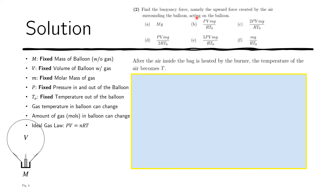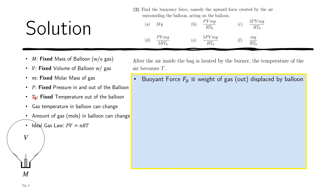Next, we need to find the buoyant force acting on the balloon. The buoyant force is the upward force created by the surrounding air, which causes the balloon to rise. By Archimedes' principle, the buoyant force equals the weight of the gas displaced by the balloon — the gas that would have occupied that volume V if the balloon did not exist. We need to find the weight of that displaced gas.